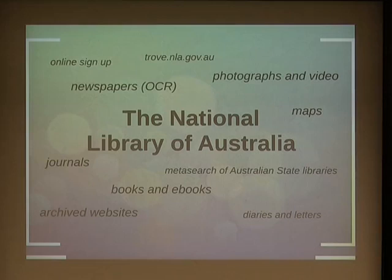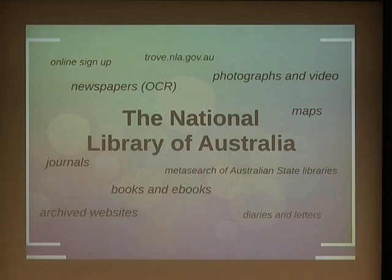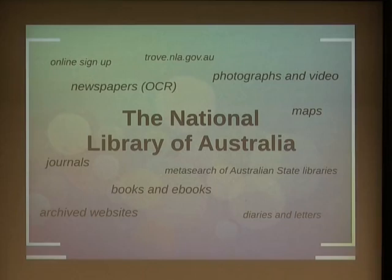The National Library has books and e-books and searches across all the libraries in the state. In the e-books section you'll find free e-books and some paid ones, but there's a really big meta-search and it can be quite useful. They have journals, a whole section of diaries and letters for historical research, maps, and lots of photos. All you need to do is sign up online. And if you're using the newspaper archive, volunteer and correct the spelling mistakes when you see them too.